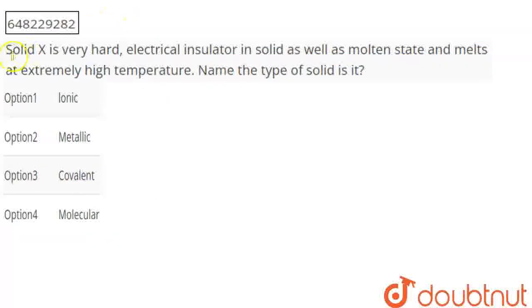The question says that solid X is very hard, an electrical insulator in solid as well as molten state, and it melts at extremely high temperature. You need to identify the type of solid it is. The options are ionic, metallic, covalent, and molecular.